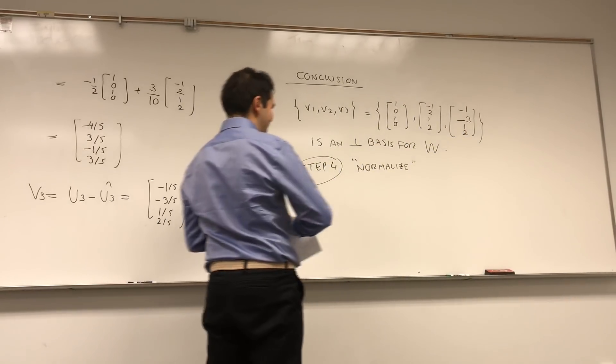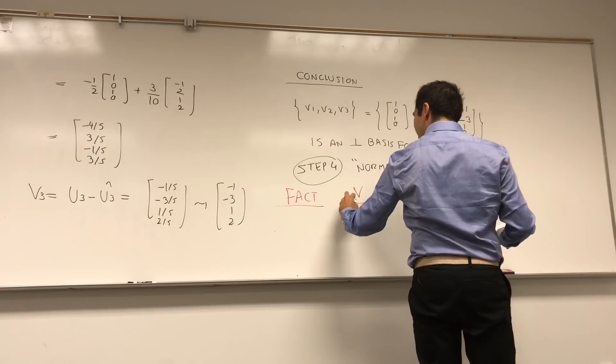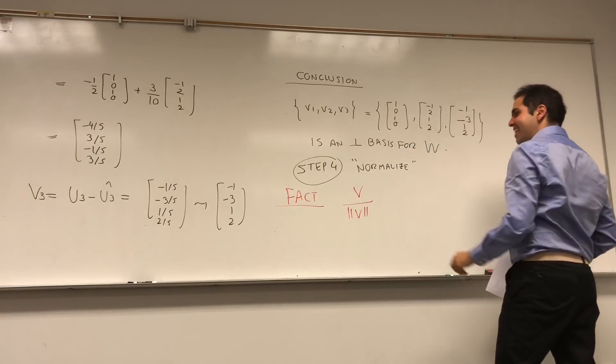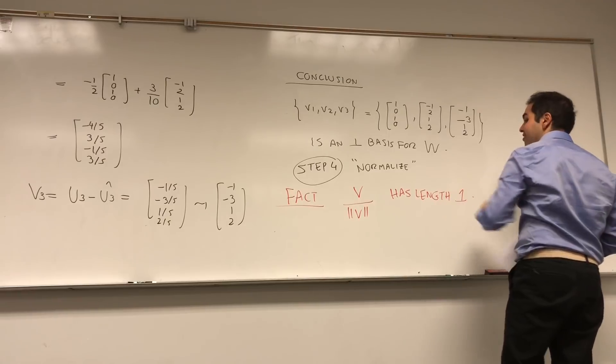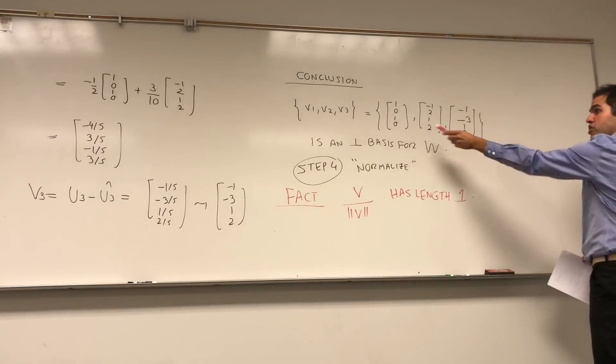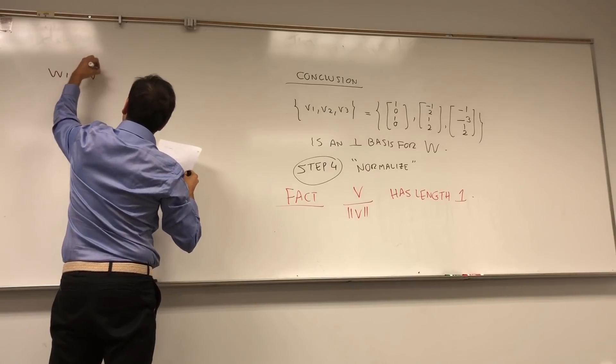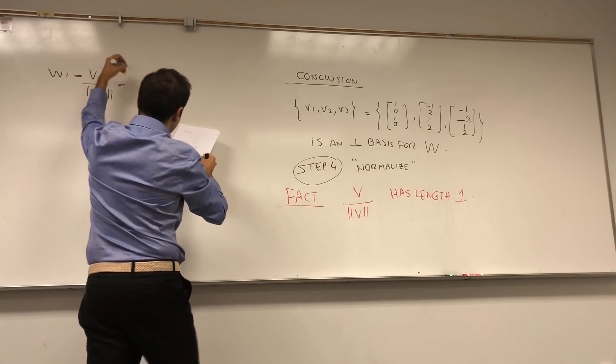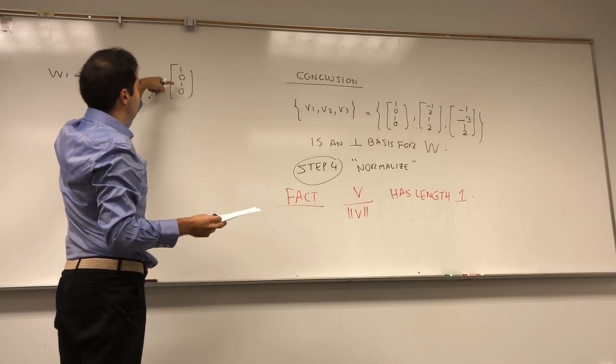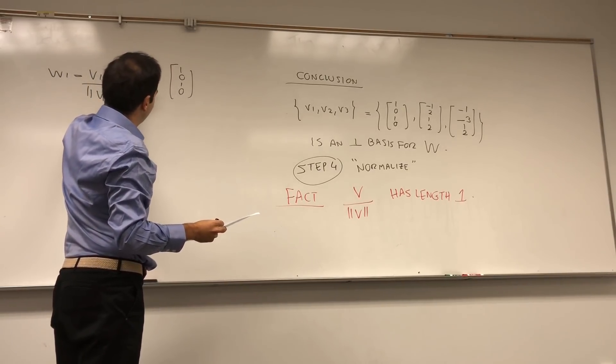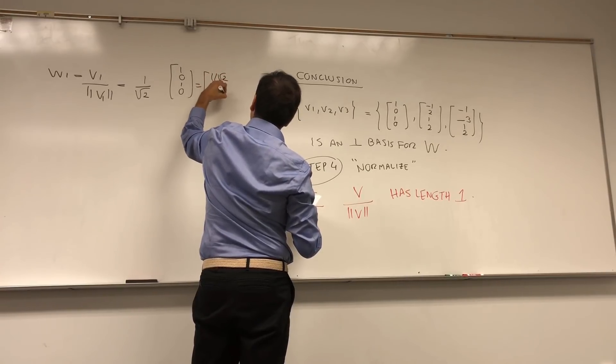And here's a cute fact: if you take a vector and you divide by its length, automatically this has length 1. Unless it's a zero vector or something. Which means that for each of those three vectors, we just have to divide by the length. Let W1 be V1 divided by its length, which is 1, 0, 1, 0. And the length of this is square root of 1 squared plus 0 squared plus 1 squared plus 0 squared, which is 1 over root 2, which is 1 over root 2, 0, 1 over root 2, 0.